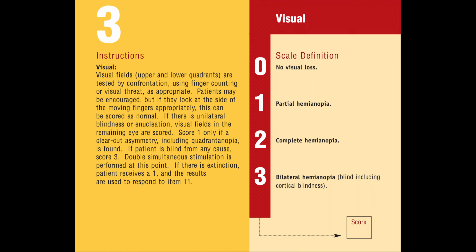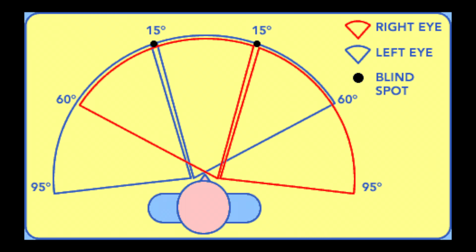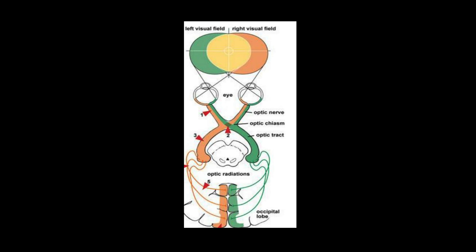The third component of the NIH Stroke Scale is called Visual, and is looking to see if an individual involved in a stroke code has any visual field cut. Visual field refers to the entire area in front of the individual that could be seen when looking straight ahead without moving their eyes or head. The visual field is divided into two parts — the left visual field and the right visual field — and is processed by the opposite part of the brain. For example, the left visual field will be processed by the right portion of the brain.